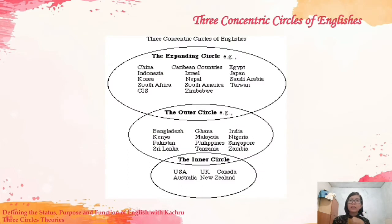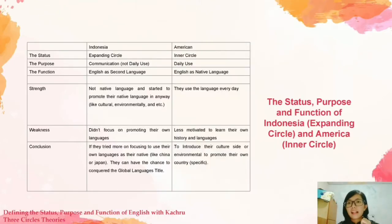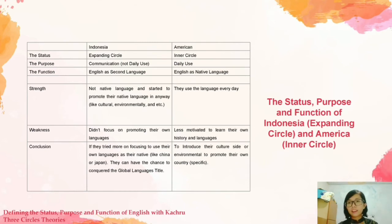This slide shows the concentric circles of English, with the inner circle, outer circle, and expanding circle. Moving to the next slide, I want to show the status, purpose, and function of Indonesia as an expanding circle country and America as an inner circle country. This is how I demonstrate that the theory can define a country's status, purpose, and function.